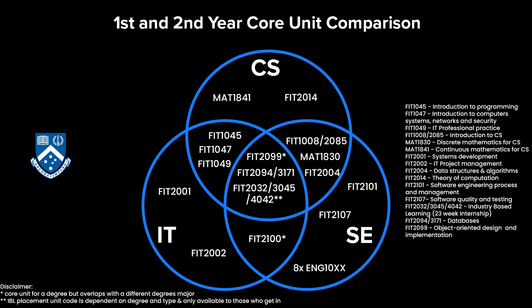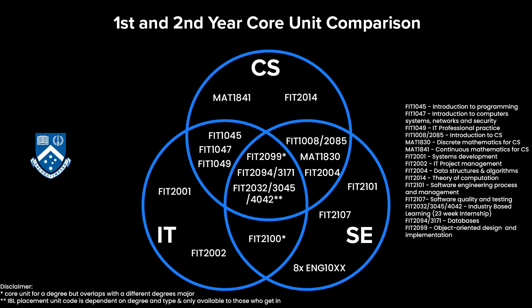Subject overlap. In regard to content overlap, here's a Venn diagram showcasing all the first and second year core units for each of the degrees. If you're not sure which degree is right for you, my top tip is to choose the two that you have the most interest in and to try out the subjects which overlap. That way, if you decide to switch degrees, you won't lose any credits. We can see that all three degrees learn about databases, and they can potentially learn object-oriented implementation depending on the majors. Lastly, all of them can undertake the IBL 23-week internship program, however not everyone gets into it, and if you don't, you will need to complete the two project units for your major.